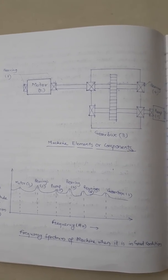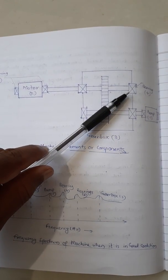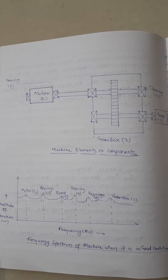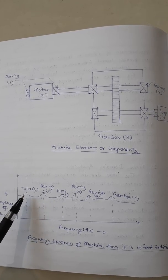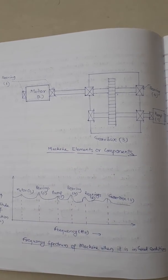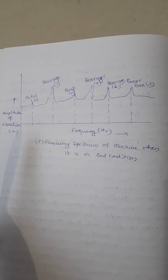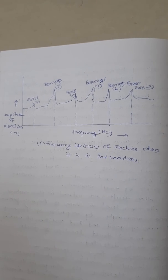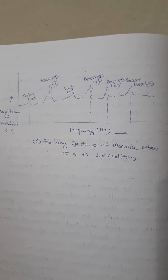For example, consider a machine with parts: motor, bearing, gearbox, pump, and other components, each having their own particular frequency. In the frequency spectrum plot when the machine is in good condition, each part like motor, bearing, pump, gearbox shows a particular vibration level at its frequency. When the machine is in bad condition, the amplitude of vibration at those particular frequencies increases. By comparing the two graphs, we can identify which machine condition has changed.